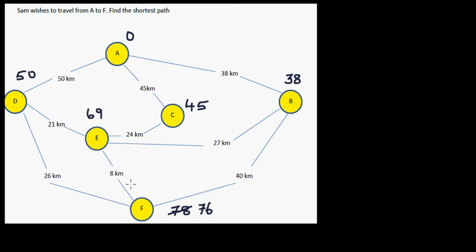Is there any other way? If you go from D to E, 50 plus 21 is 71. So that is, again, not better than 69. So it will not improve on 69.